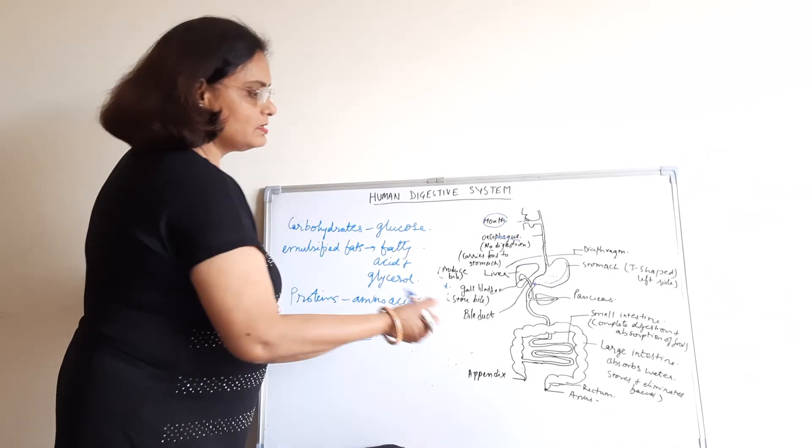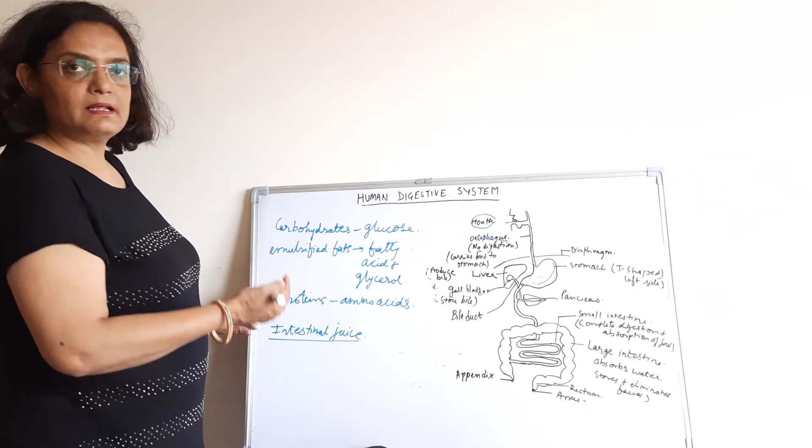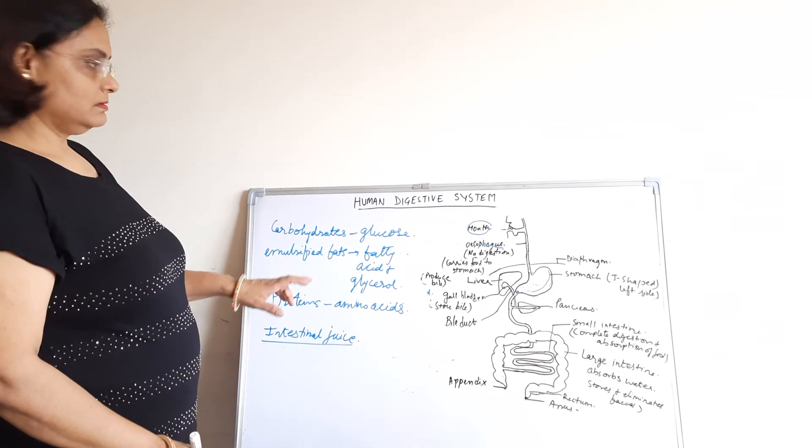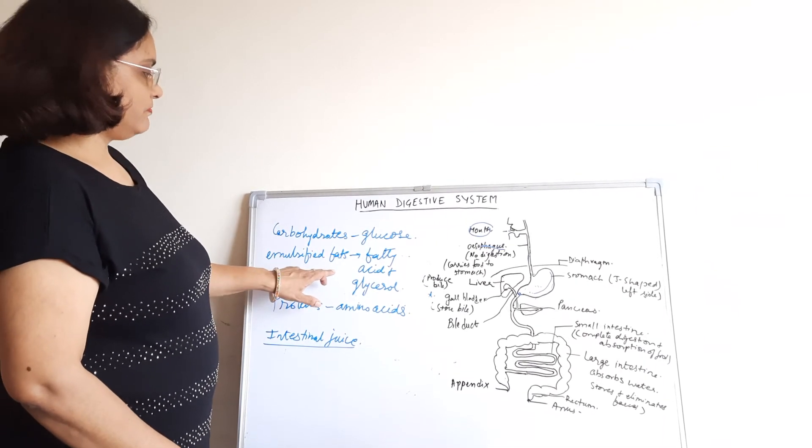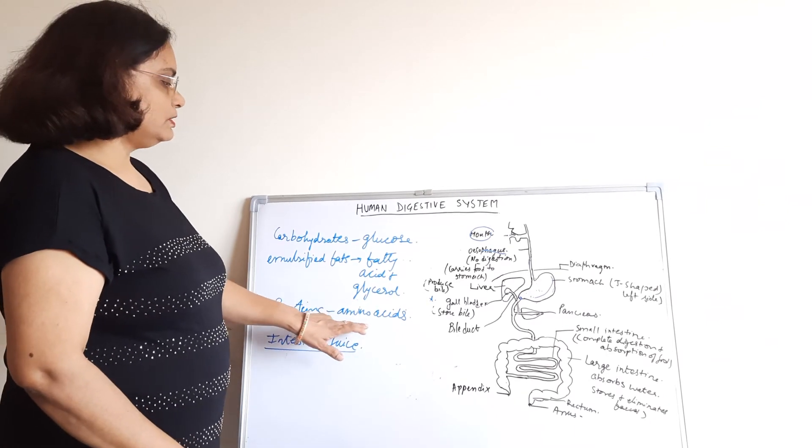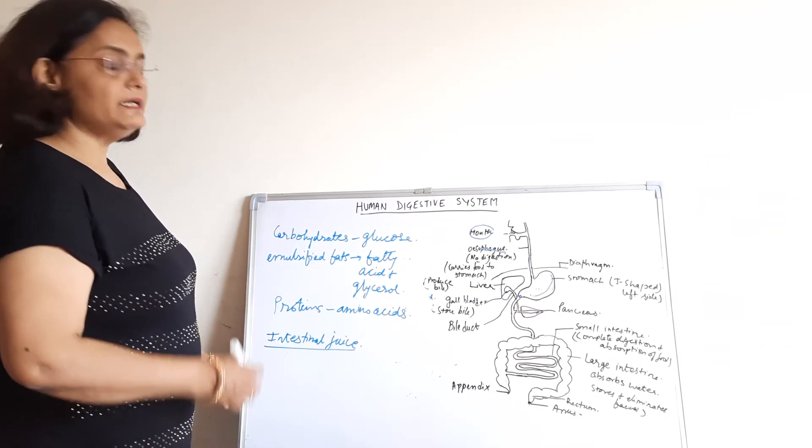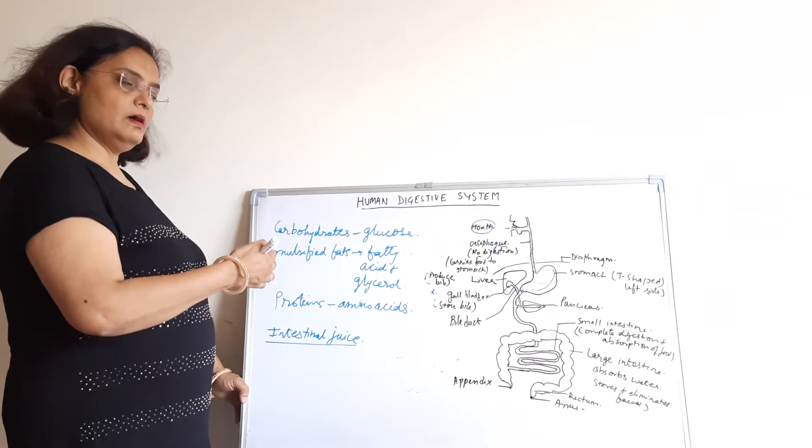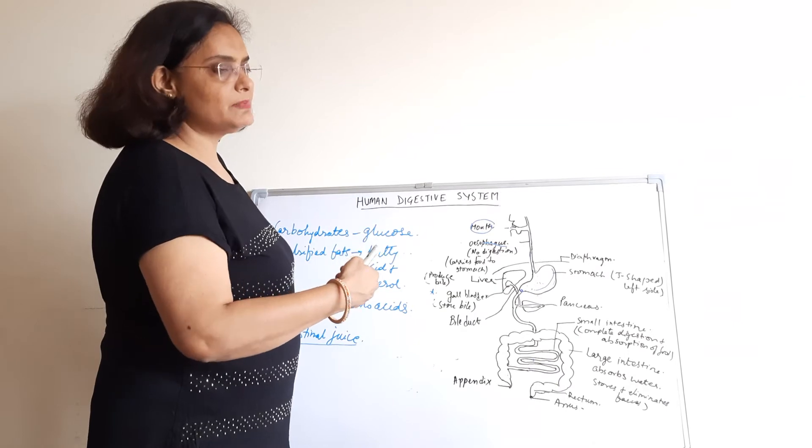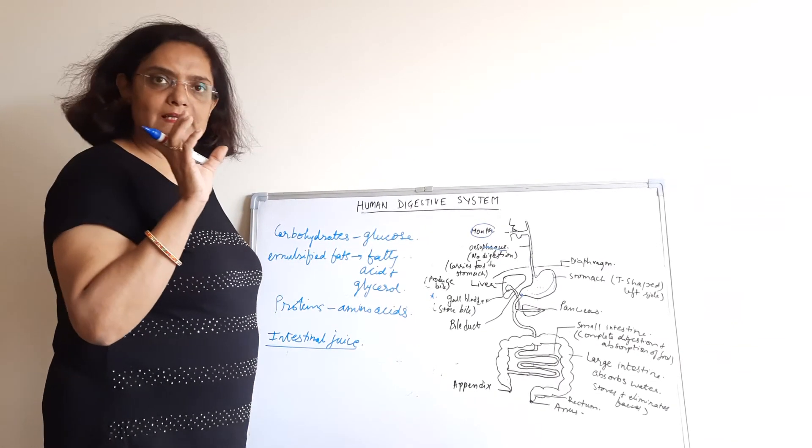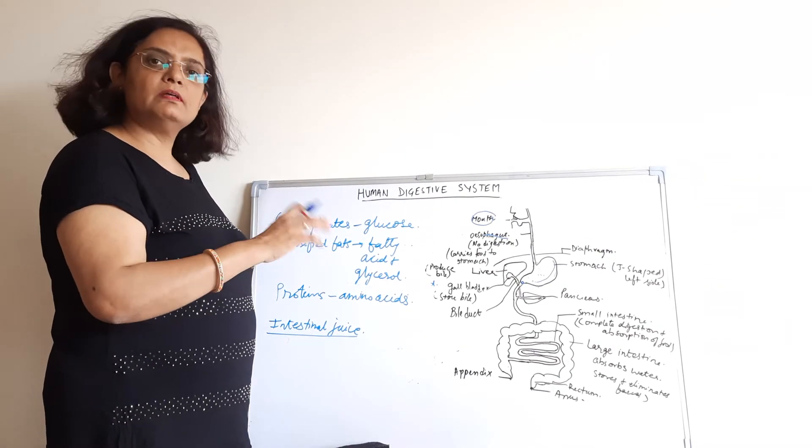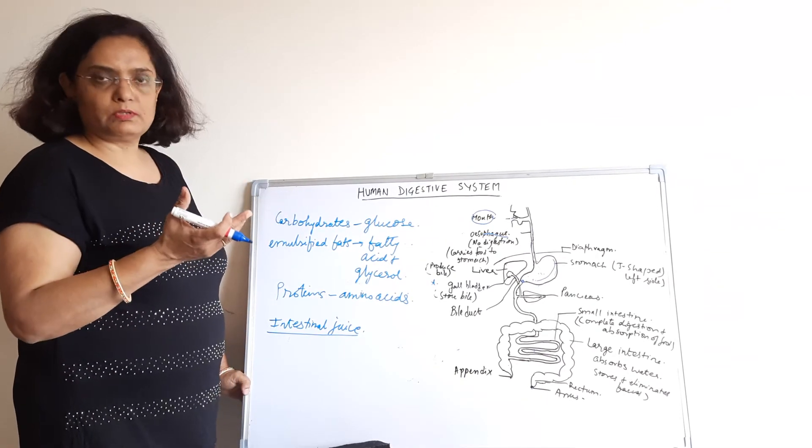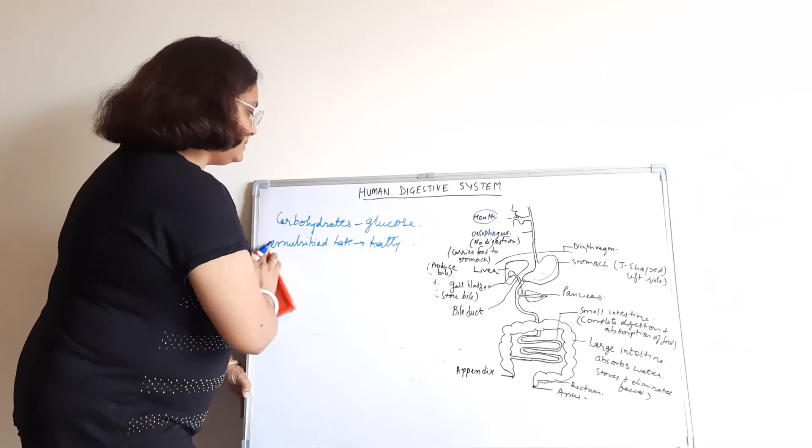The walls of the intestine have intestinal glands which secrete intestinal juice. It contains a number of enzymes that digest carbohydrates into glucose, emulsified fats into fatty acids and glycerol, and proteins into amino acids. So, complete digestion of food takes place in the small intestine.